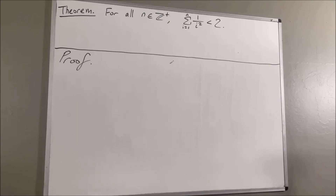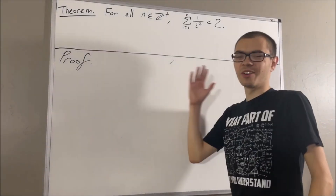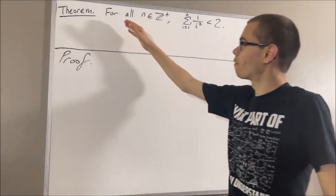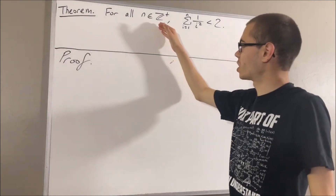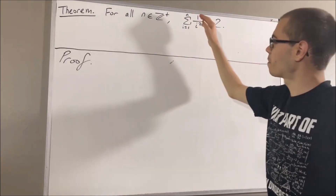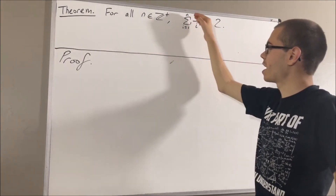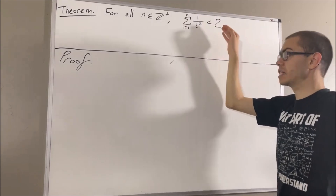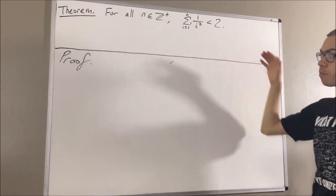Hello. In this video, we are going to prove the following theorem. For all positive integers n, the sum from i equals 1 to n of 1 over i squared is less than 2.